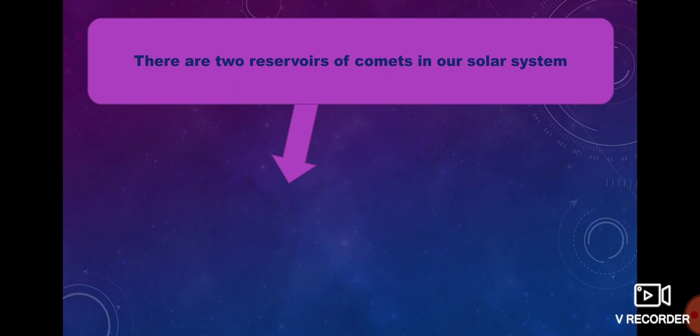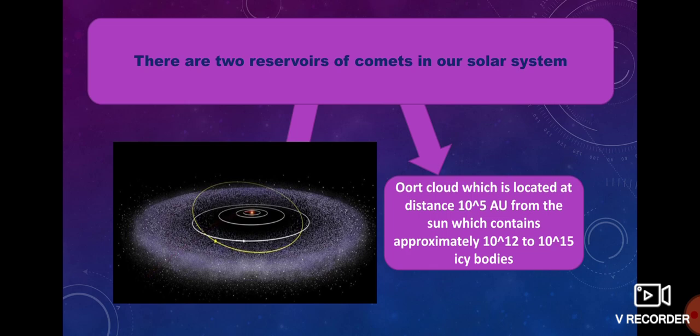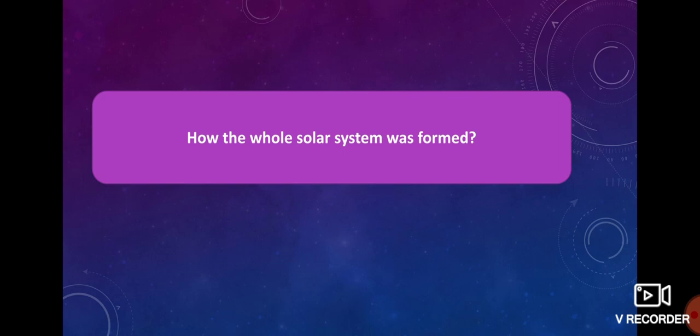There are two reservoirs of comets in our solar system. First is the Kuiper Belt, located at a distance of 10^3 astronomical units from the Sun, and it contains 10^9 to 10^10 icy bodies. Second is the Oort Cloud, located at a distance of 10^5 astronomical units from the Sun, which contains approximately 10^12 to 10^15 icy bodies. Our solar system is really very large.